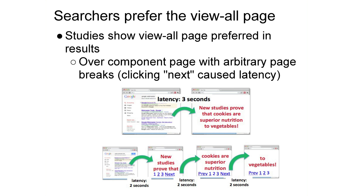Before we go there, let's take a step back and talk about what Google's doing. We're always working to improve the experience for searchers. One thing we found through testing is that our searchers prefer seeing the view-all page in their search results, opposed to an individual component page. One reason for this might be latency. If you click a result to a view-all page, that might take three seconds to load the article. But searchers were less happy when search results took them to just page one of the article — while that might have only two seconds of latency, every time a user wanted to click next to read more, it caused additional load time. So because of this latency and other reasons, searchers prefer the view-all page.